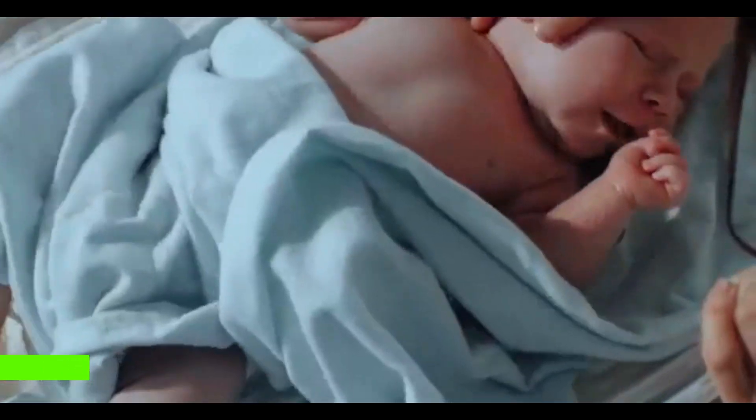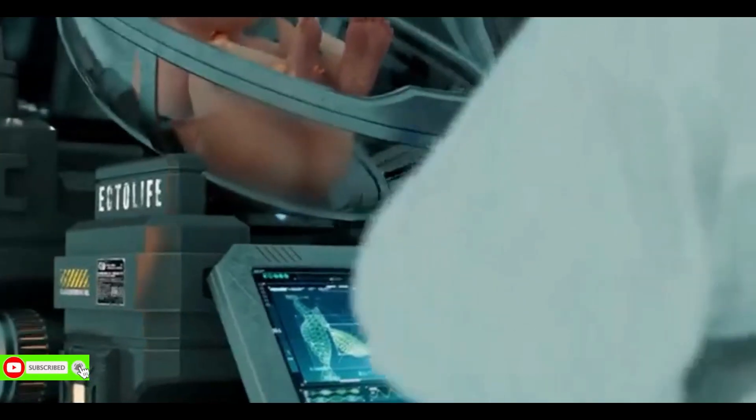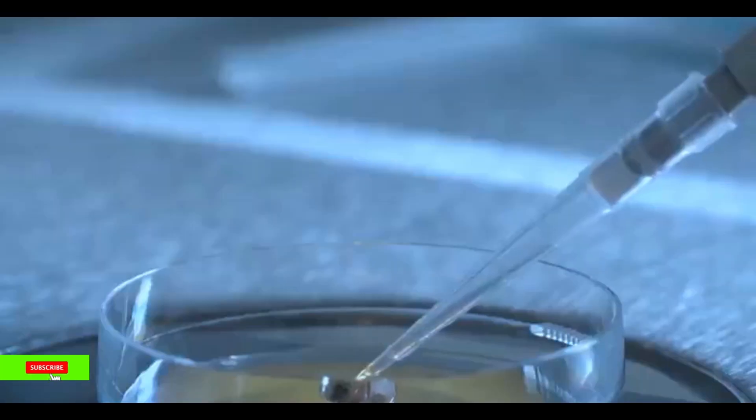With Ectolife, miscarriage and low sperm count are a thing of the past. Prior to placing the fertilized embryo of your baby inside the growth pod, in vitro fertilization is used to create and select the most viable and genetically superior embryo, giving your baby a chance to develop without any biological hurdles.